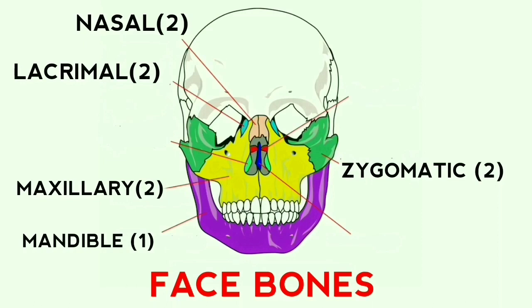The next bone is the palatine, with a quantity of two bones. These bones form the back part of the hard palate floor and part of the side walls of the nasal cavity. They are shown in the figure with red color.